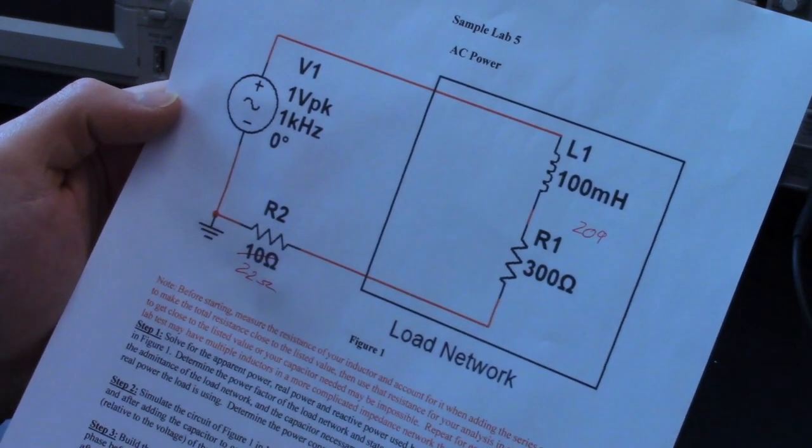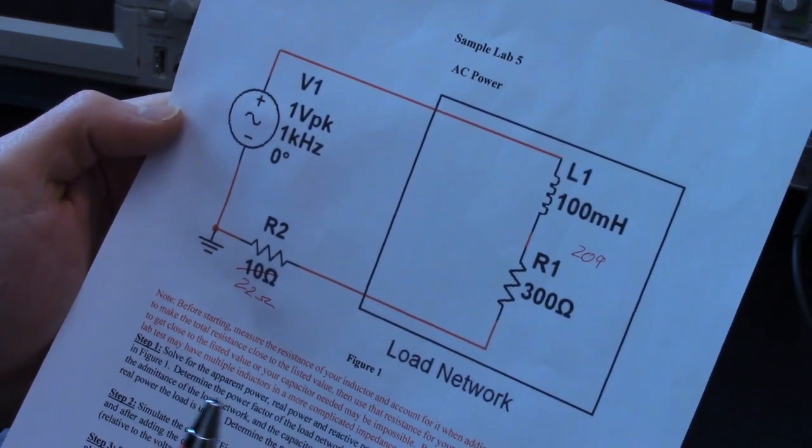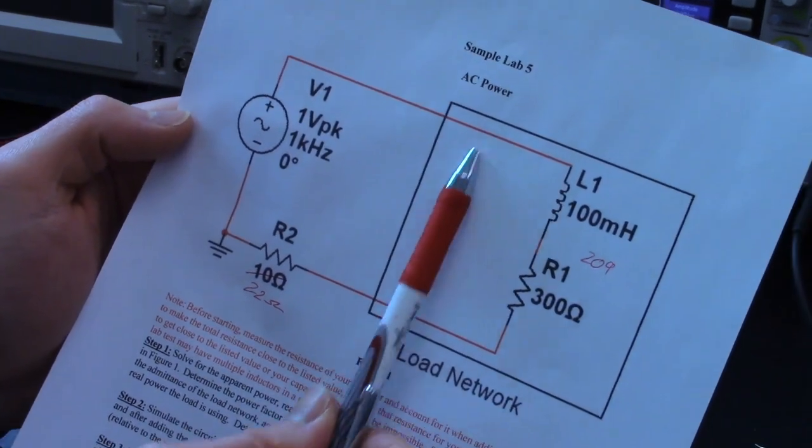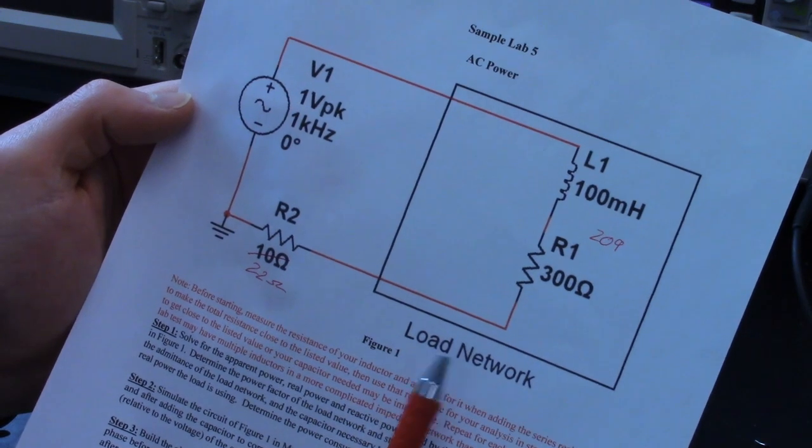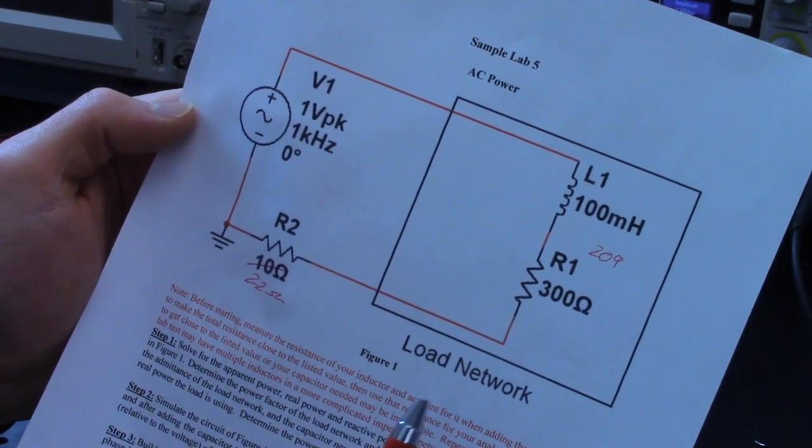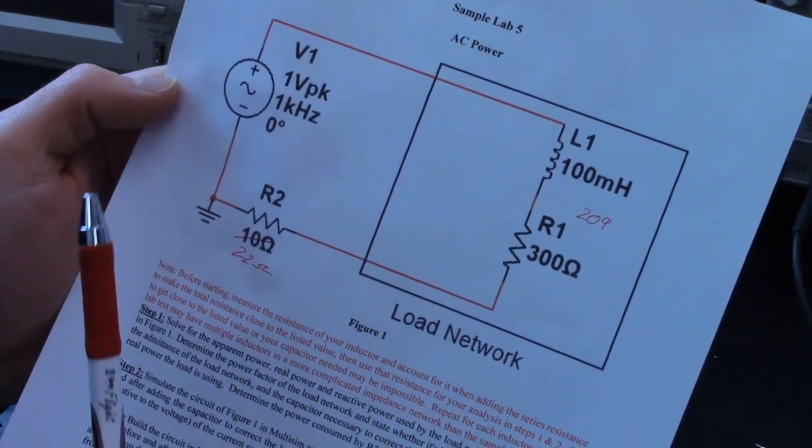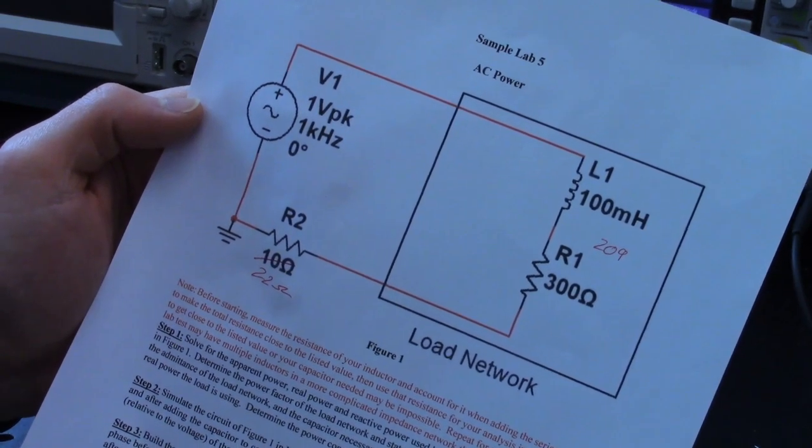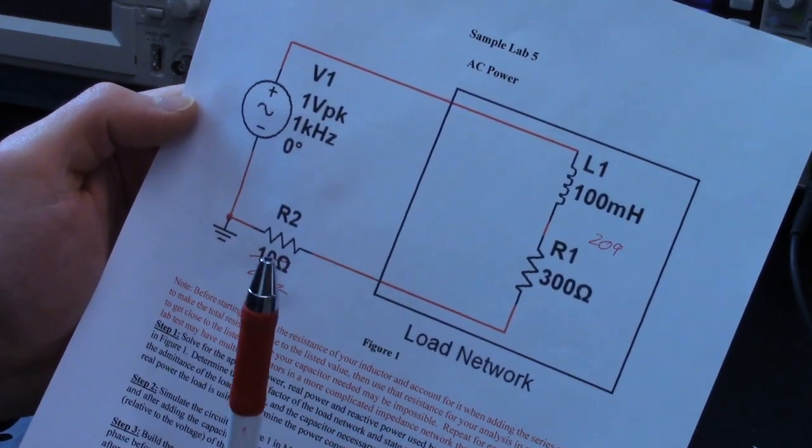Our goal is to figure out how much power is absorbed by this load network, both the real, reactive, and apparent power, and then figure out what capacitor to add in parallel in order to zero out the reactive power that's applied in order to unify the power factor, bring the power factor to one, so that we are going easier on the source network.